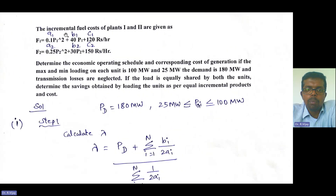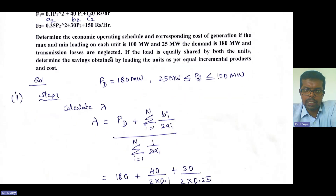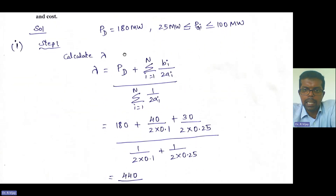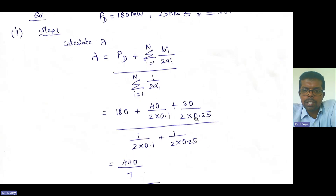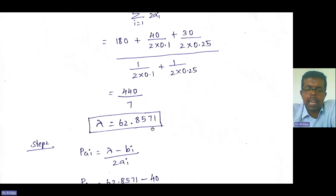Already you have marked A1, B1, C1, A2, B2, C2. The general formulation is Ai·PGi² + Bi·PGi + Ci. Substituting the demand of 180 plus B1 divided by 2A1 plus B2 divided by 2A2, all divided by 1 divided by 2A1 plus 1 divided by 2A2, and solving with a scientific calculator, we get the lambda value as 62.857.